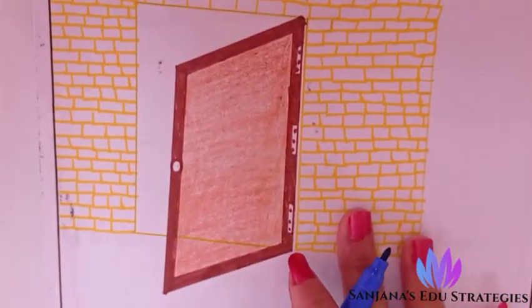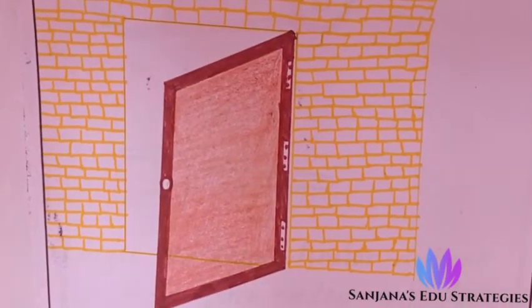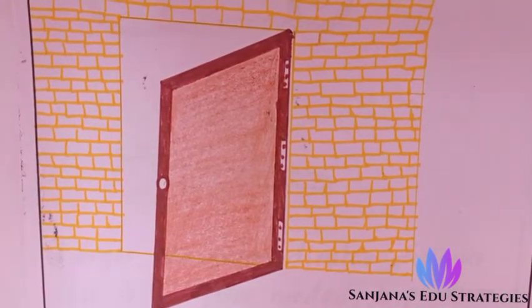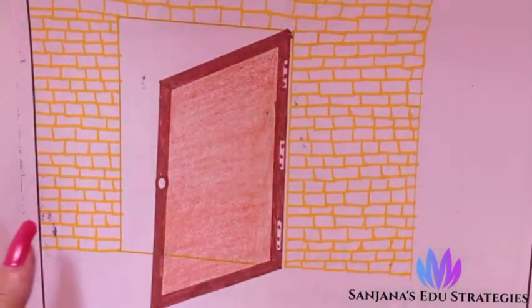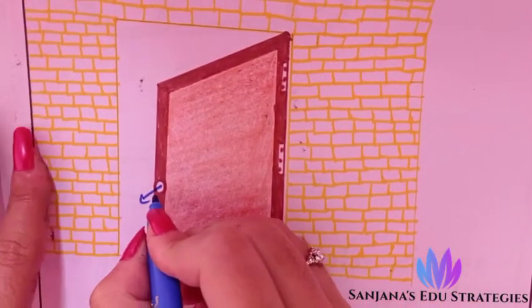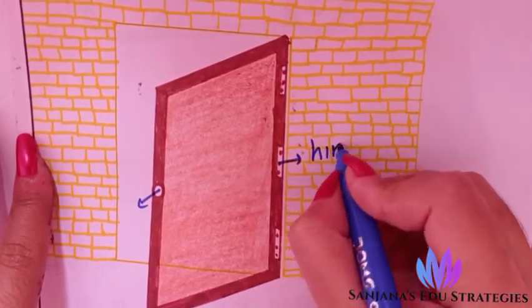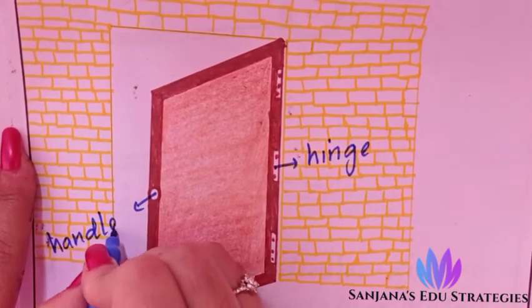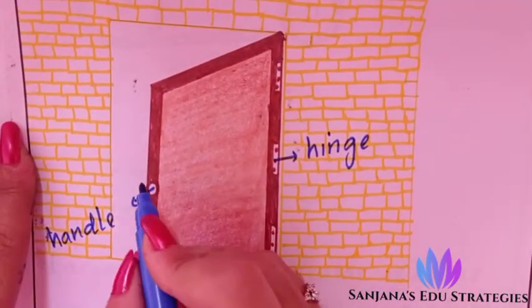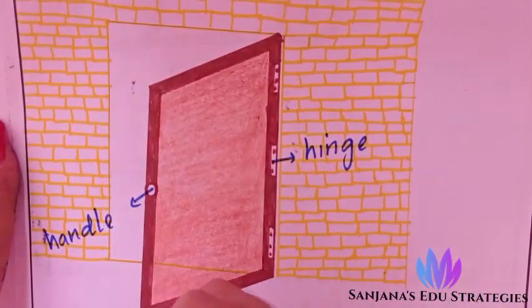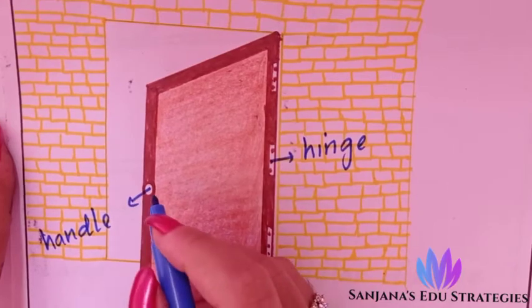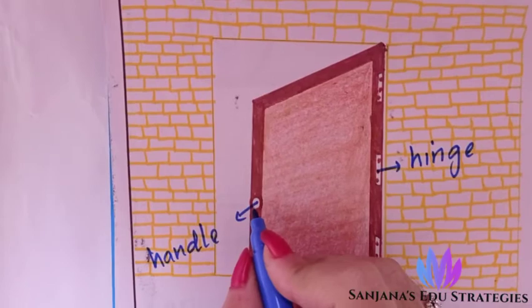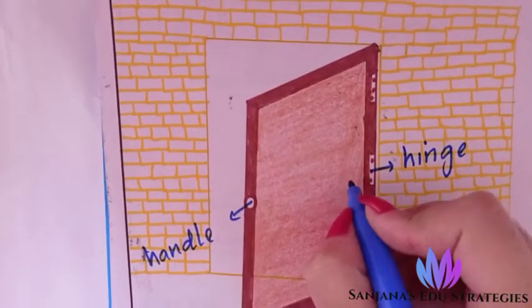Take a door as an example. While opening or shutting a door, we are working with the moment of force. The handle is where we apply the force, and the hinge is the pivoted point. When opening or shutting the door, we apply force at the handle.